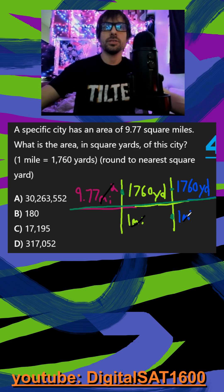So this cancels out with my miles squared. I get yards times yards. And if I multiply all this together, you get something close to our answer choice in A.